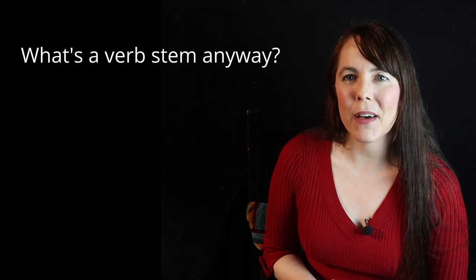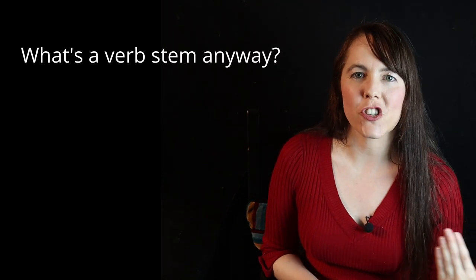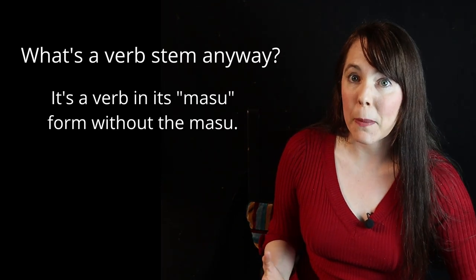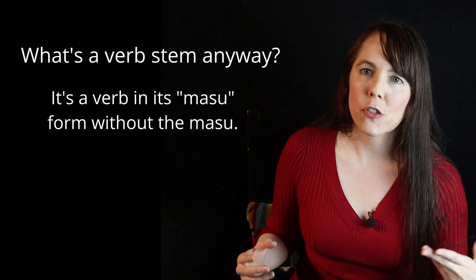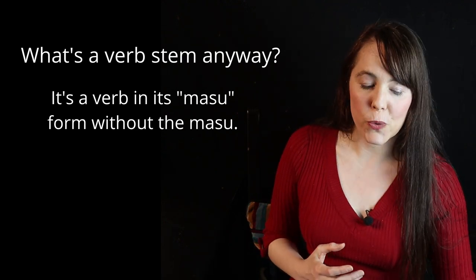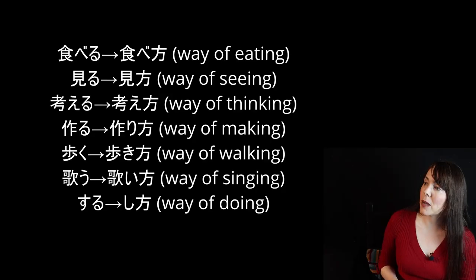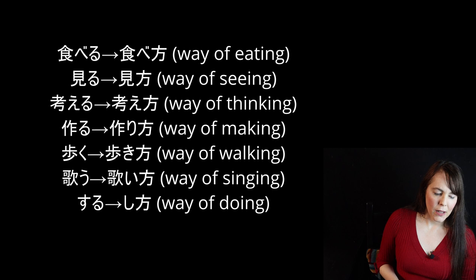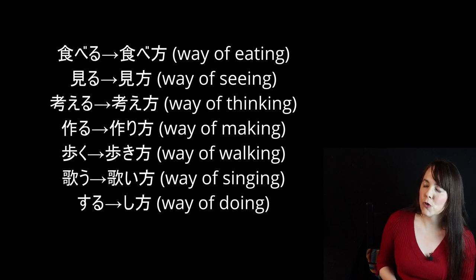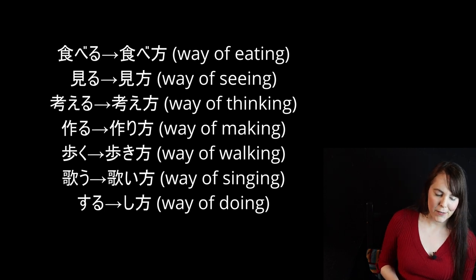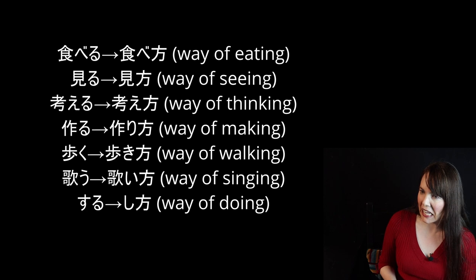A reminder that a verb stem is just the verb in its masu form minus masu. So the way you convert a few verbs to their kata form is thus: taberu becomes tabekata, miru becomes mikata, kangaeru becomes kangaekata, tsukuru becomes tsukurikata, aruku becomes arukikata, utau becomes utaikata, suru becomes shikata.